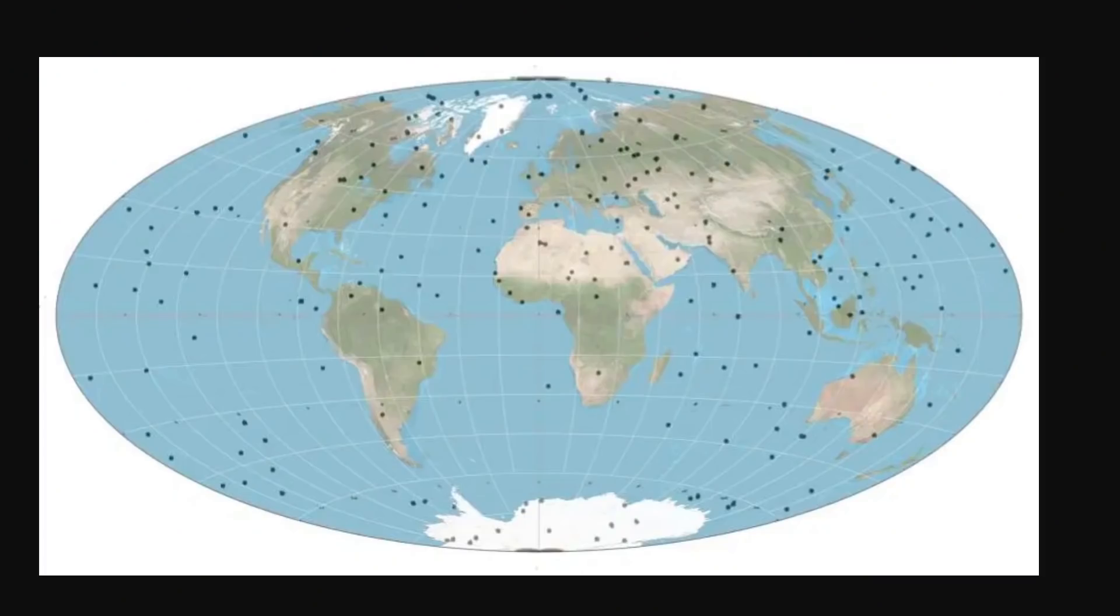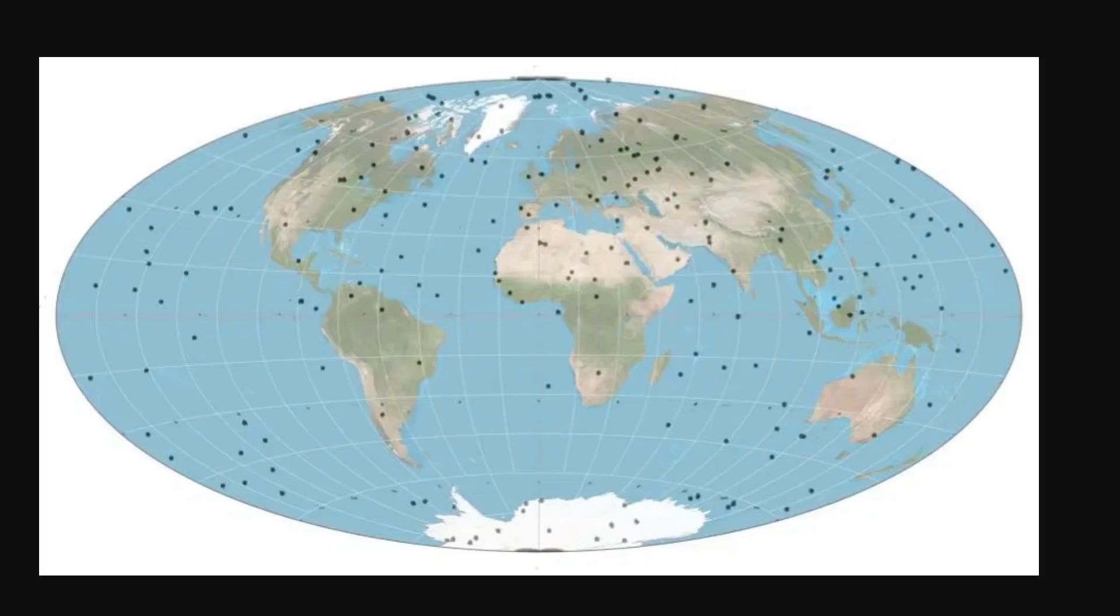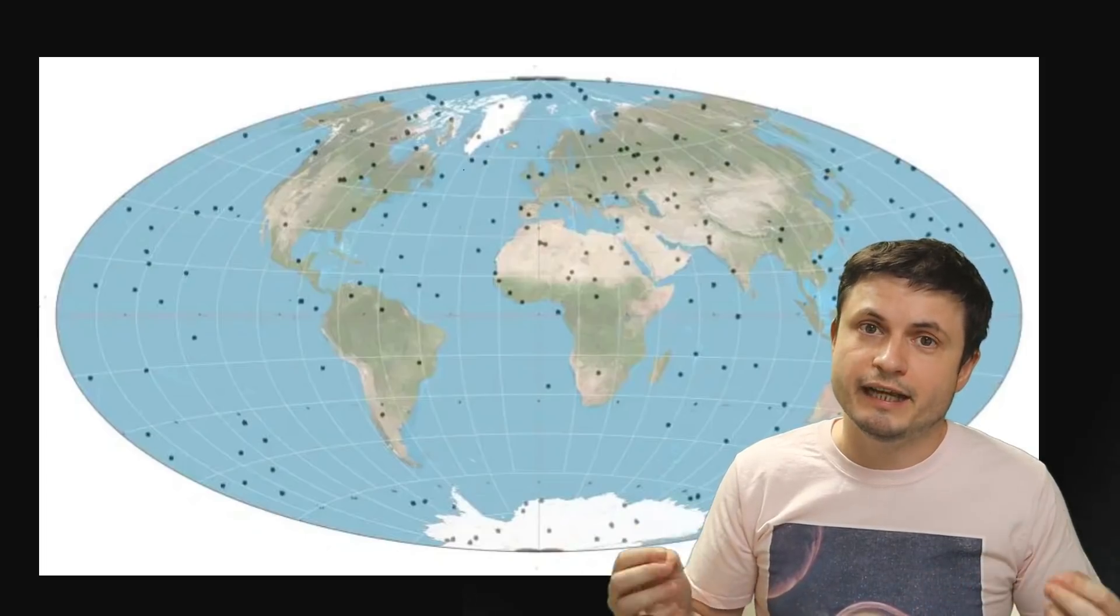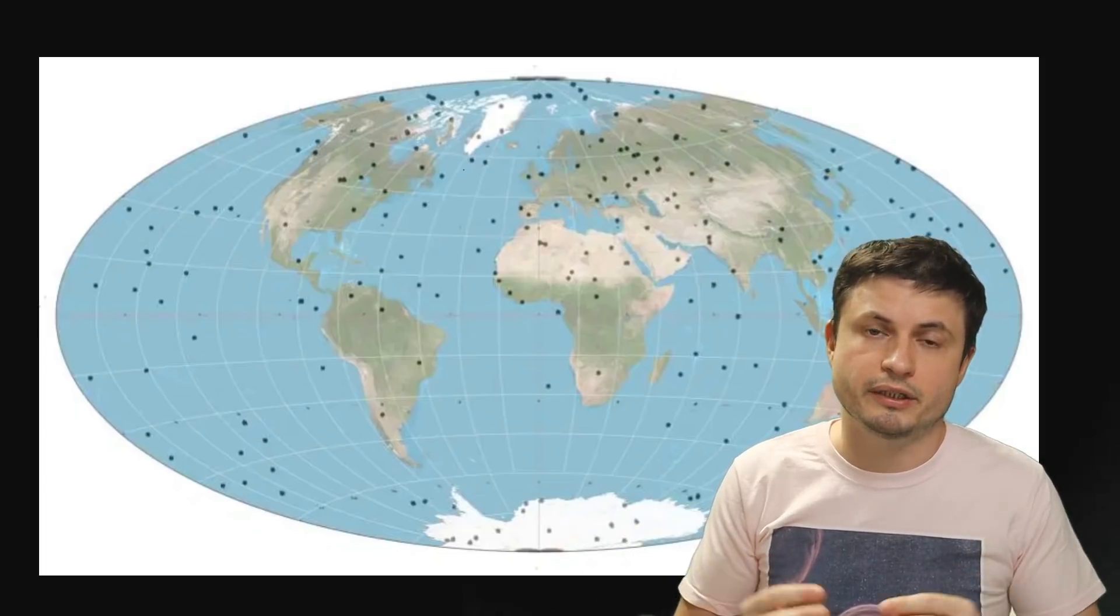And since quasars, unlike stars, are pretty much motionless in the night skies, we can use them to pinpoint the exact location of pretty much anything anywhere, at least in our galaxy. And this map right here, created by Daniel Cummings, shows you the 212 different quasars used by the GPS system in order to establish the exact positions of things on planet Earth.